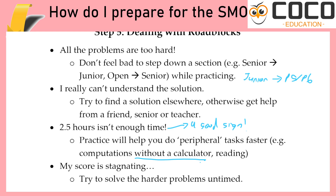Finally, what if your score is stagnating — you're just repeatedly scoring eight out of 25 every time? Then you need to at least get the experience of solving a hard question. Time is often what stops you from that experience, so solve it untimed. Untimed allows you to experiment — try three methods that fail before the fourth one works — and you get that satisfaction of saying: I can actually solve these questions.